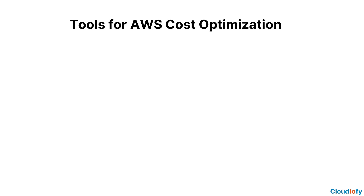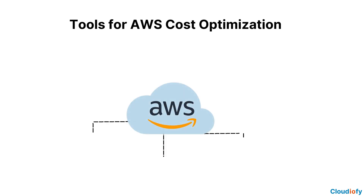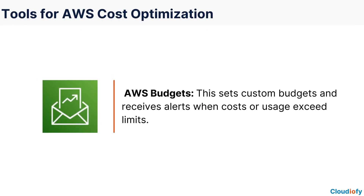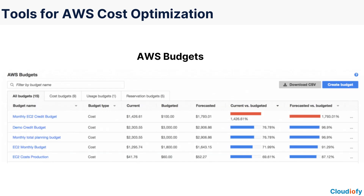Let's talk about the AWS tools that you can use for cost optimization. AWS Budgets is a useful feature that lets you set custom budgets that trigger alerts when costs or usage exceed a predetermined amount. This tool enables you to stay within your budget and optimize your spending to maximize your profits.